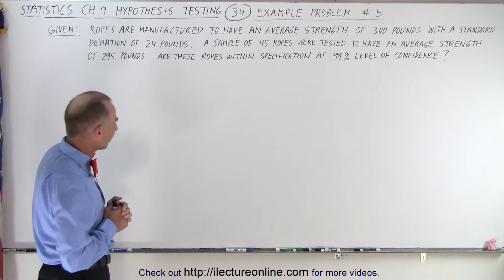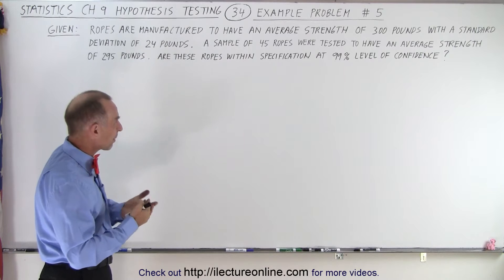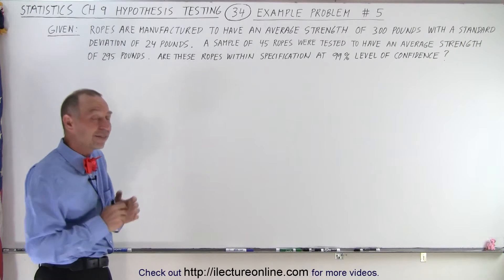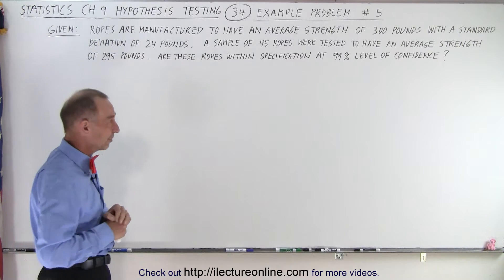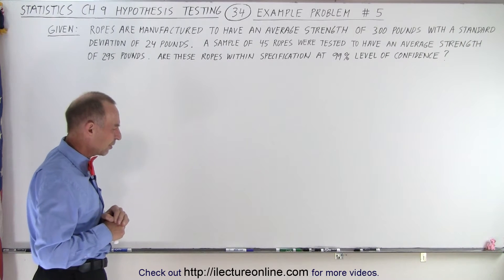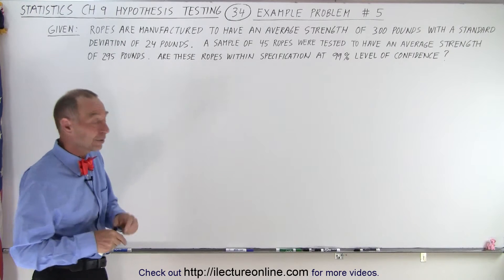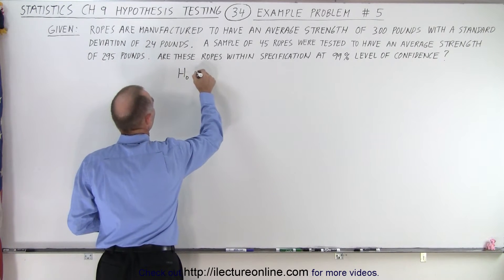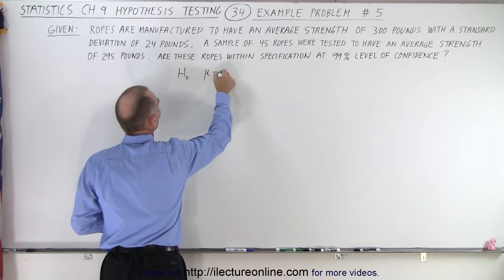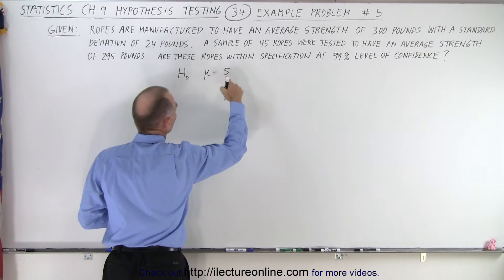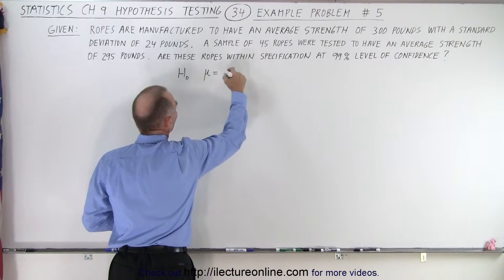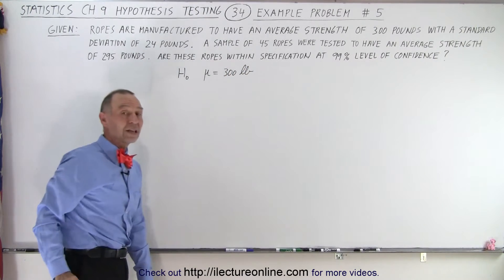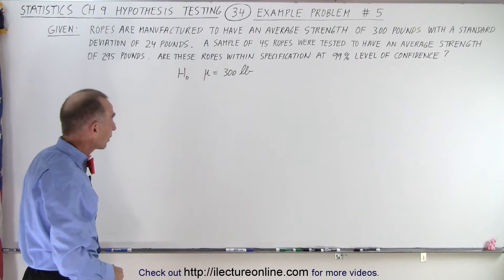295 versus 300, with a sample of 45, we want to be 99% confident. Let's see if these ropes pass the test. The first thing we want to do is set up a null hypothesis. The null hypothesis is that the average is equal to 300 pounds — that they are within specification, that the average strength is 300 pounds.